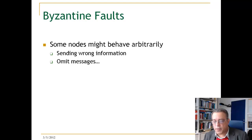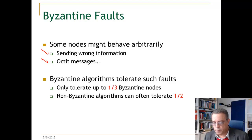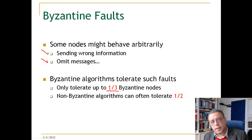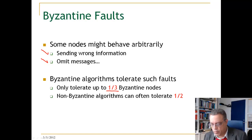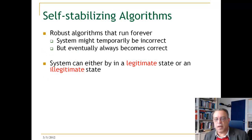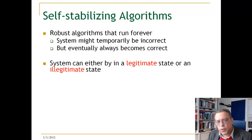In Byzantine faults, nodes might behave arbitrarily — sending wrong information or omitting message sending and reception. Byzantine algorithms can tolerate faults such that if up to but not including one-third of nodes are faulty, we can still perform critical algorithms like consensus and atomic broadcast. By contrast, non-Byzantine algorithms tolerate only up to half of machines failing.